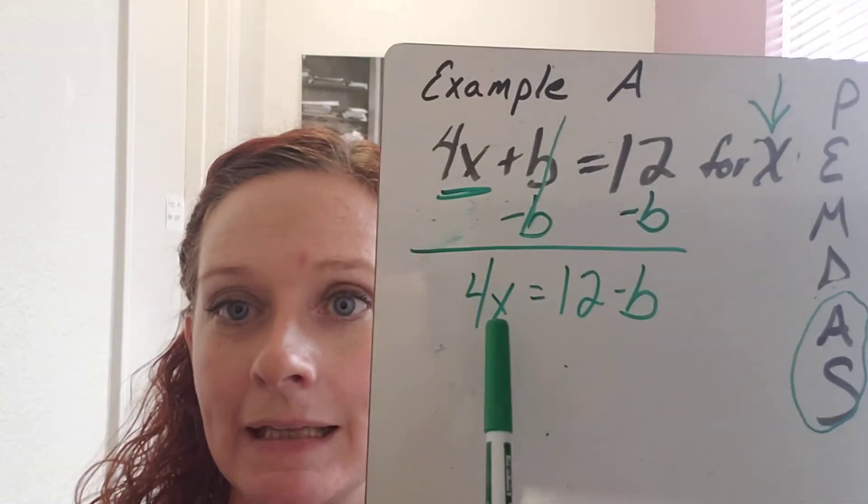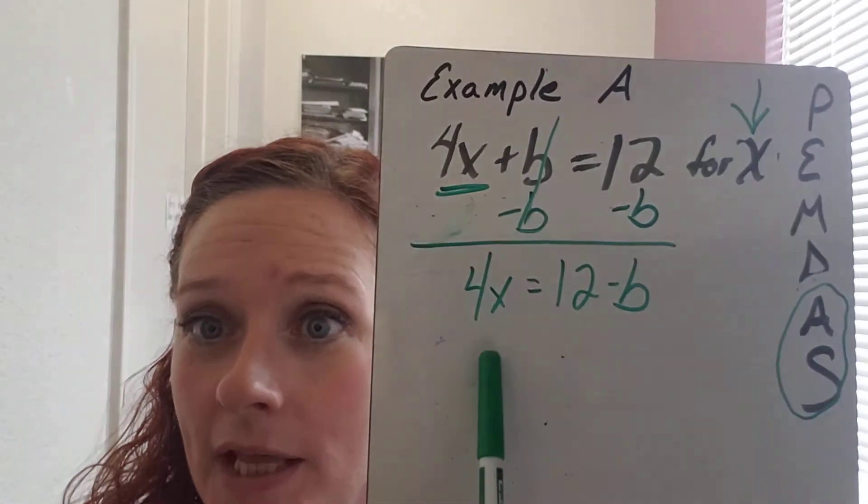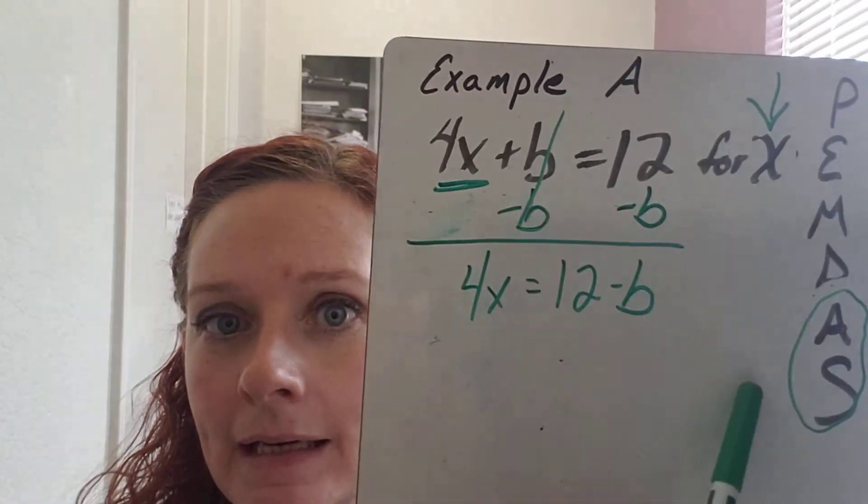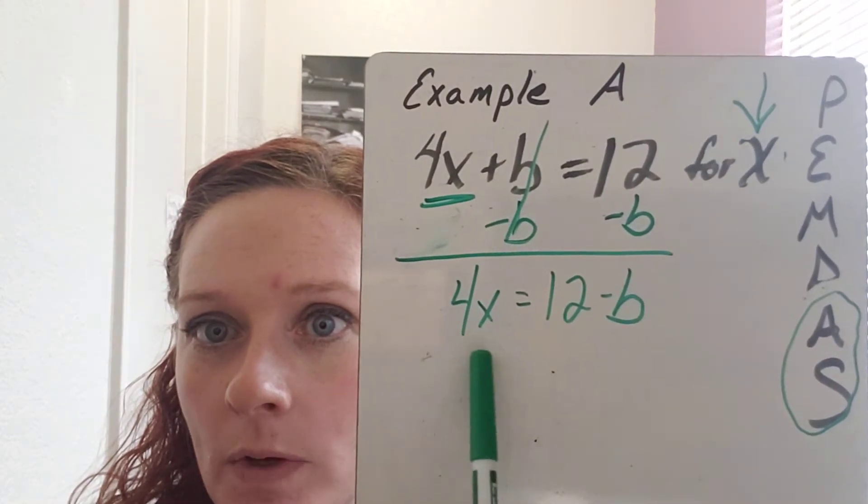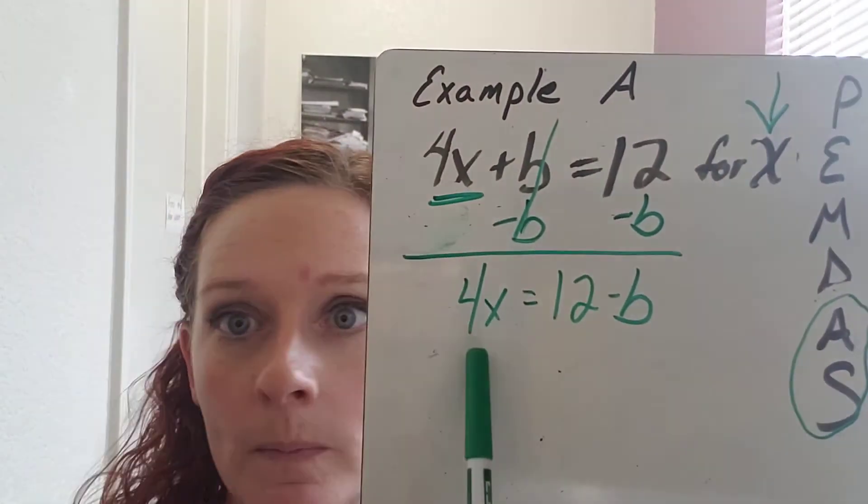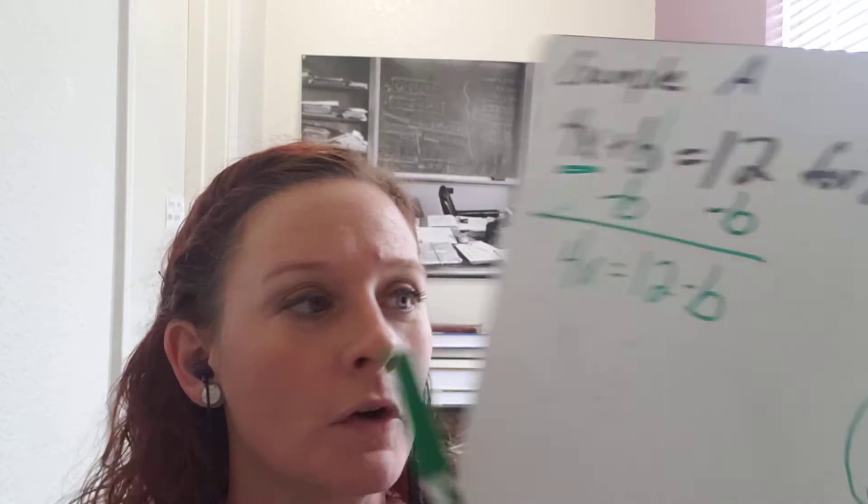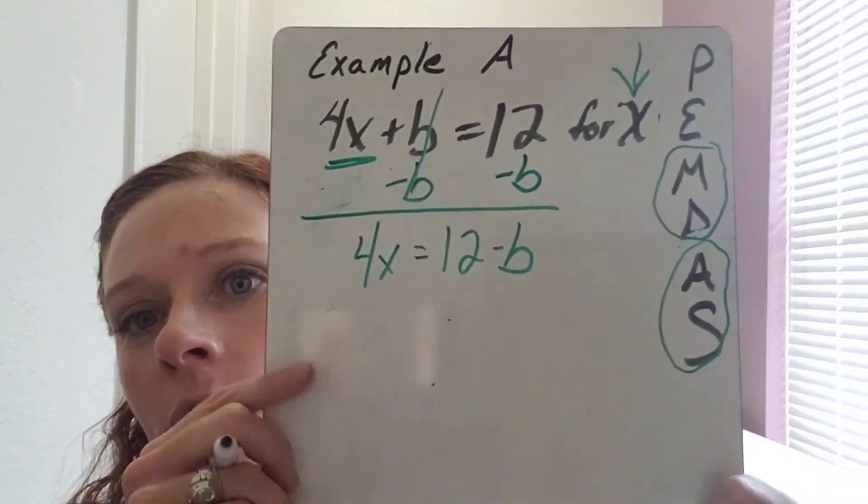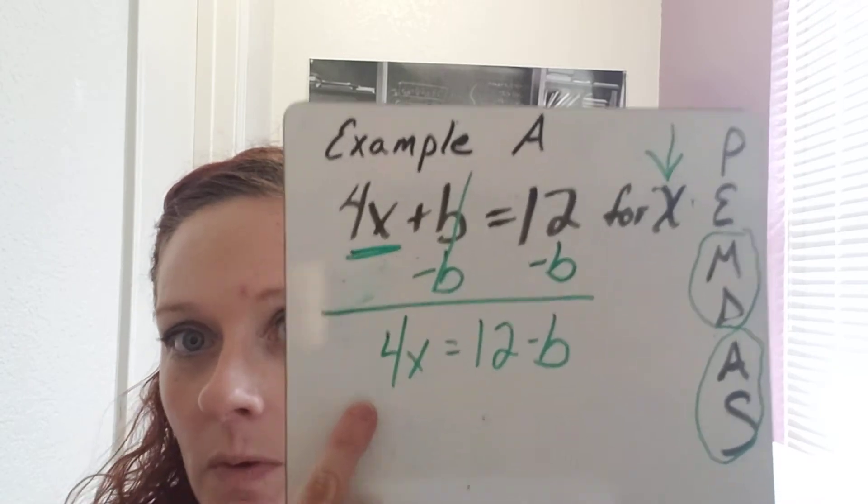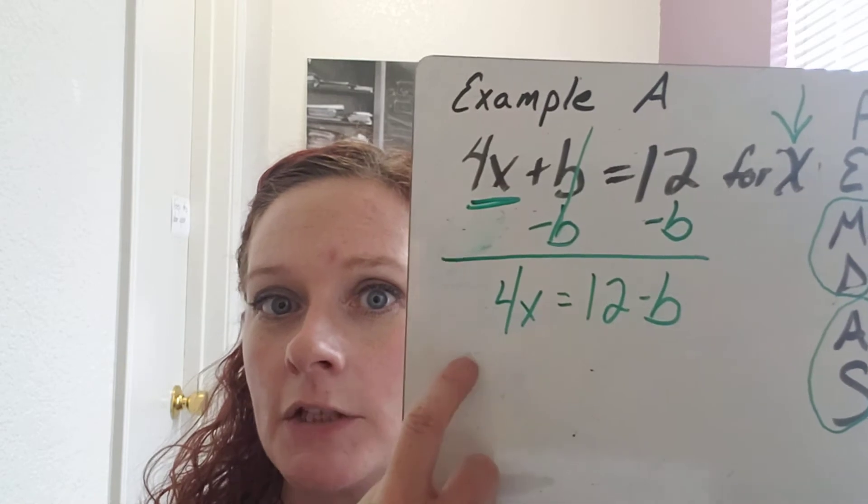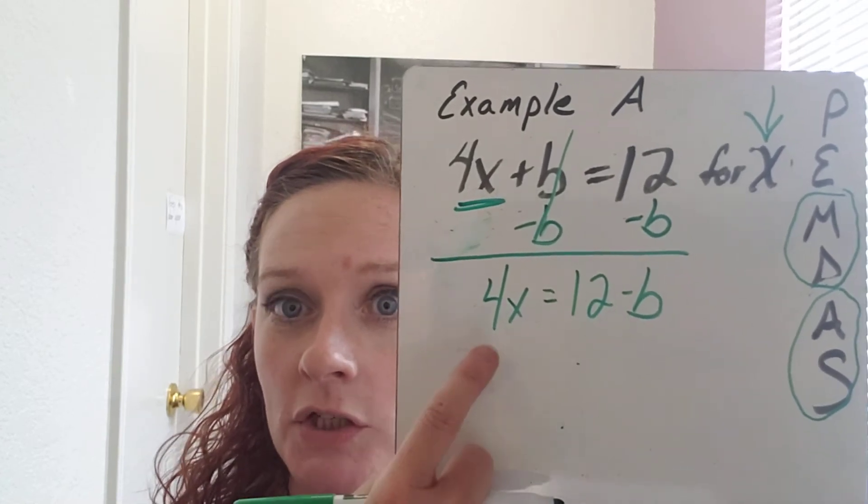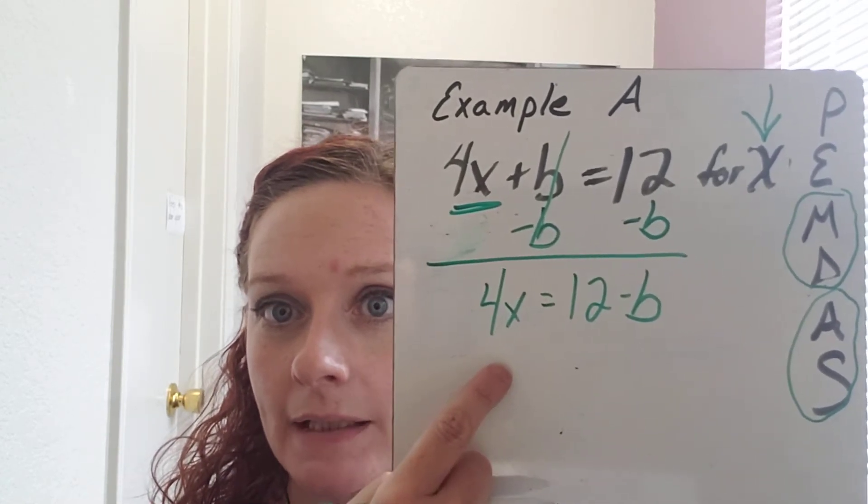When we are isolating the X, we're going to come to the side with X and we're going to say, is there any more addition and subtraction that we need to deal with? No, there's not. We're going to move to multiplication and division. We're going to look at the side with the variable we want to isolate, get alone. And in this case, that's X.